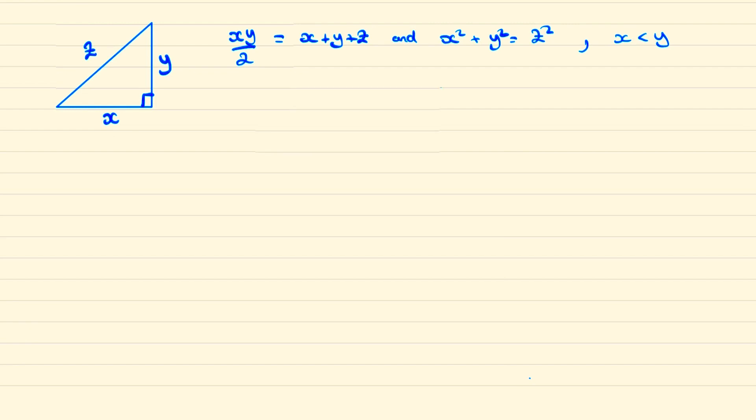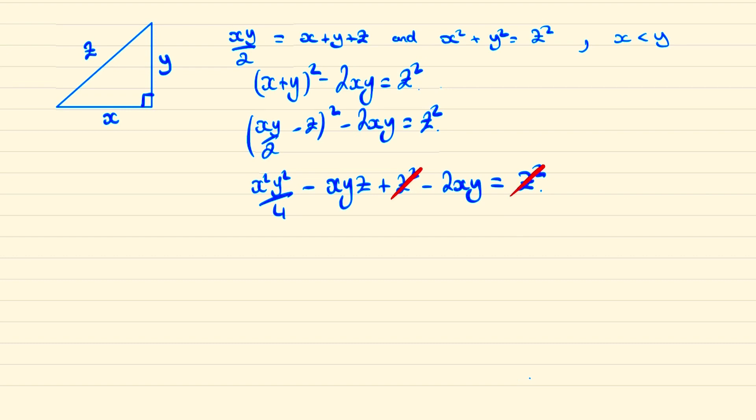Firstly we'll notice that we can set up Pythagoras' theorem as x plus y all squared minus 2xy and we'll make the substitution that x plus y is xy over 2 minus z from the area equals perimeter. Expanding this expression we find we can cancel out these z squares on both sides and divide everything by xy so we have xy over 4 minus z minus 2 equals 0.